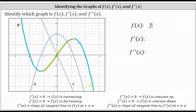This means the first derivative must be negative on the left, positive in the middle, and negative on the right. Looking at function a and function c, function a is negative over the same interval where function b is decreasing, positive where function b is increasing, and negative again on the right where function b is decreasing. This indicates that function a must be f prime of x, or the first derivative.